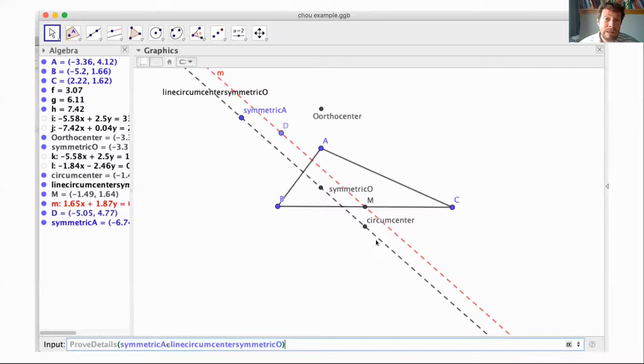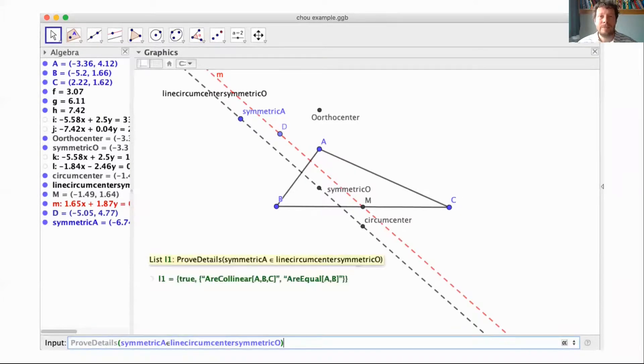But we need to notice that humans have to find the geometric properties on our own, namely that line parallel to the one described by symmetric O and the circumcenter that goes through the midpoint M of BC. At the moment GeoGebra cannot provide such exact information, only visual hints.